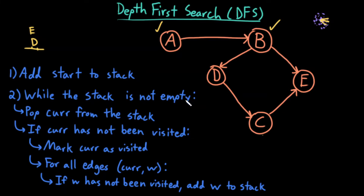While the stack is not empty, pop the top one off — that's E, my current node. If the current node has not been visited, mark it as visited. E has no outgoing edges, so there are no edges to iterate over and nothing happens here.